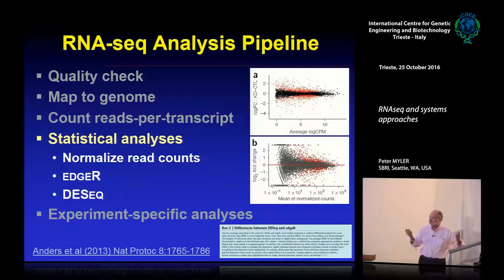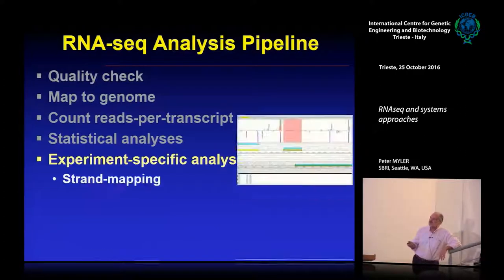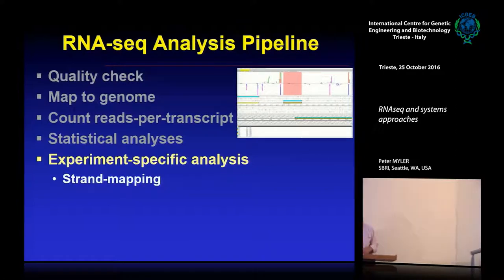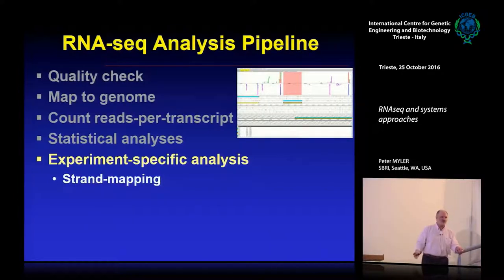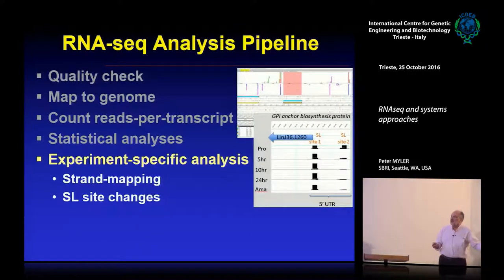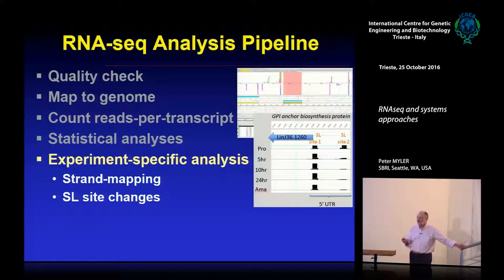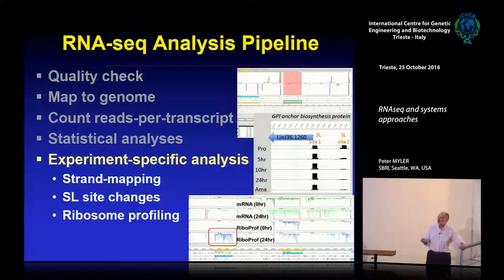We tend to like edgeR, but that's personal preference. You can also do experiment-specific analyses — for instance, in Artemis you'll see where reads align, and you can make strand-specific libraries to distinguish coding from anti-coding strand. For trypanosomes and Leishmania, I think it's important to know which strand you're on. You can also do splice leader site analysis, and ribosome profiling requires a completely different set of analyses.